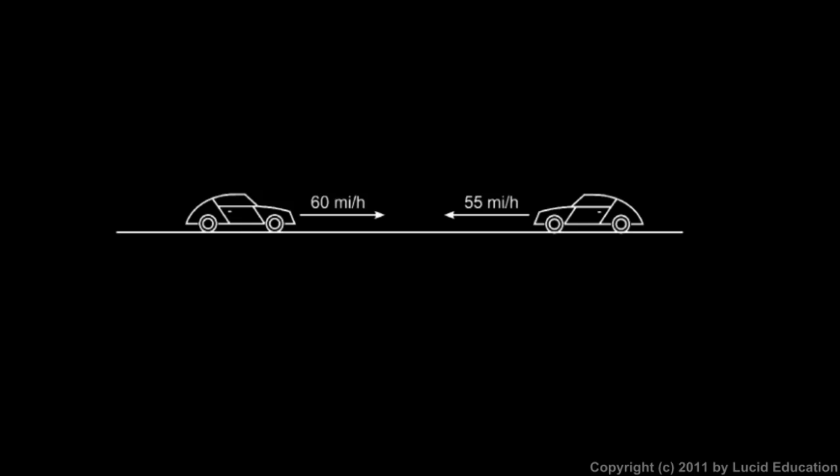This situation is different though. This car is moving to the right at 60 miles an hour. This car is still moving at 55 miles per hour, but now it's moving to the left. This is going to be a head-on collision. If they hit each other, the gap here between these two cars is being closed at the combined speed of 60 plus 55 miles per hour. That adds up to 115 miles per hour.